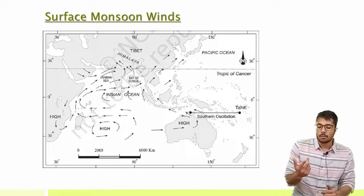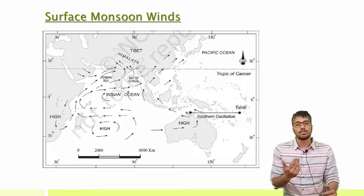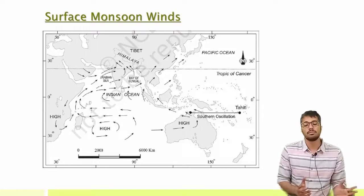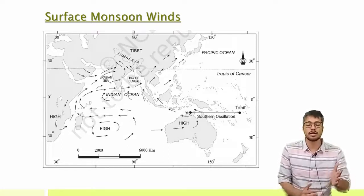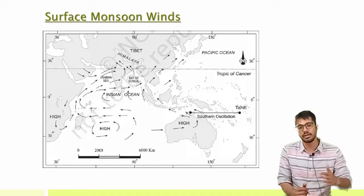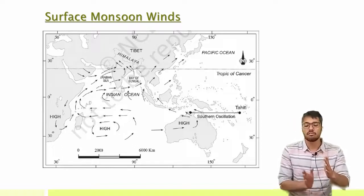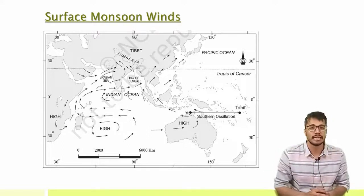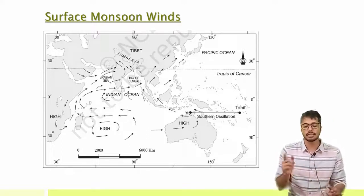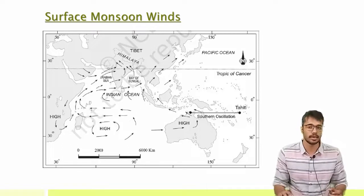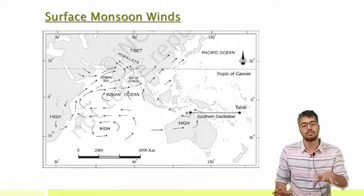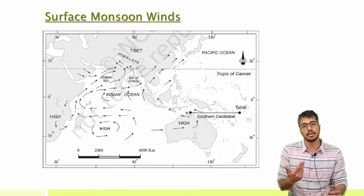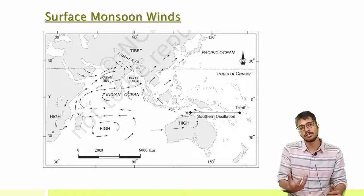Another thing you can observe in this figure: at the onset of the southwest monsoon, it is distributed into two branches — the Arabian Sea branch and the Bay of Bengal branch. It enters India from the Arabian Sea branch on the west side, and from the Bay of Bengal it enters from the northeast and then moves to north India. In this way, monsoon winds are distributed across India. This is the major surface monsoon pattern — the seasonal reversal.